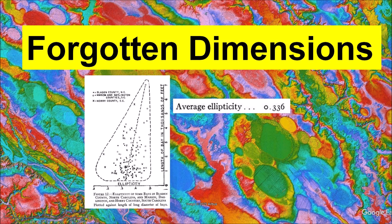When the Bays were first studied scientifically in the 1930s, it became evident that the Bays were elliptical and that they had a very restricted aspect ratio. This fact was ignored or conveniently forgotten when the origin of the Bays was later attributed to the action of wind and waves,